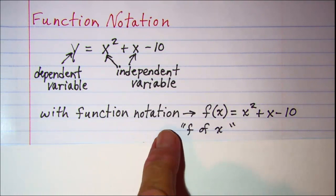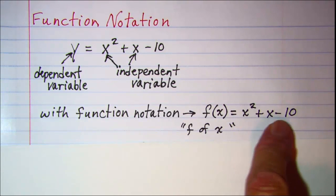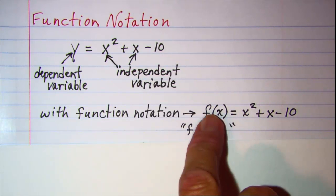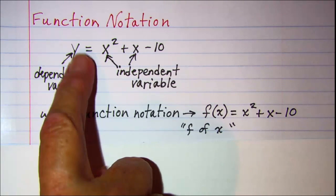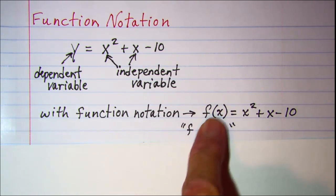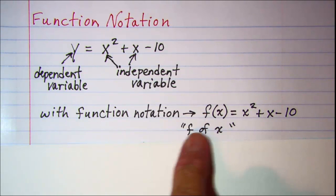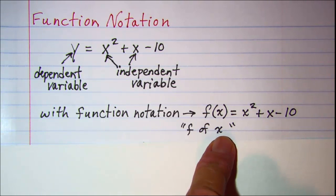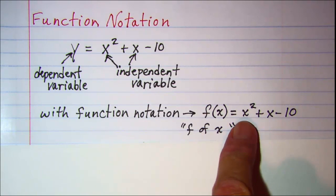With function notation we'll have the same expression except instead of y on the left side we'll have f(x), and this is not multiplication you read it as f of x, meaning that this expression or this function is a function of x.